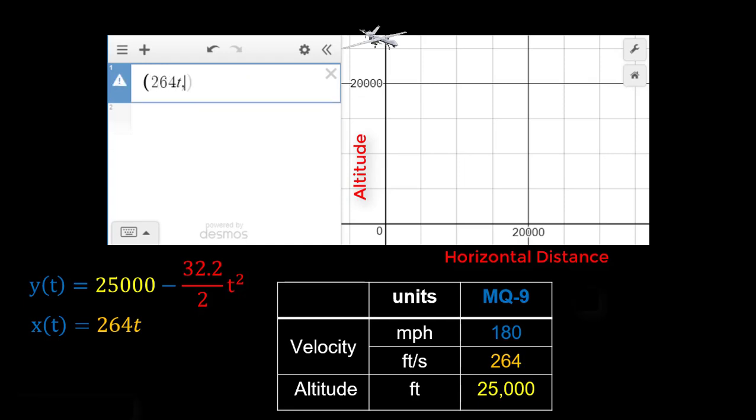I'm going to plug in my Y value, which is 25,000 minus 32.2 over 2 times T squared. And now we've got our first point up here, but we can go ahead and adjust our T to go from 0 to 40 seconds. And that gives us sort of that whole trajectory here that the bomb would travel after releasing from the MQ-9.